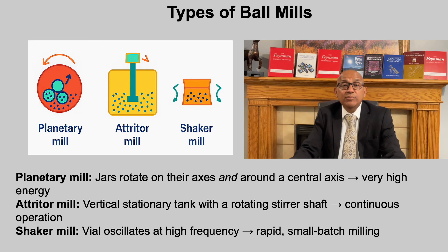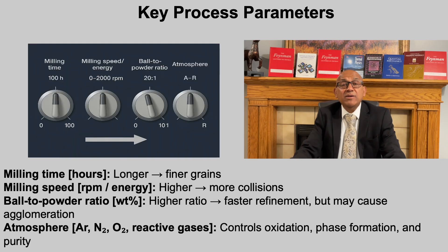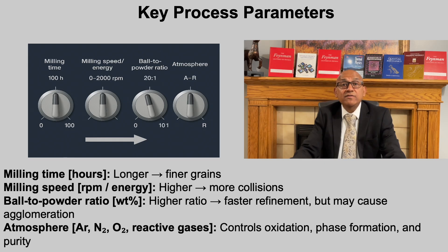Each configuration balances energy input, throughput and scalability depending on the intended application. Several parameters govern the efficiency of ball milling: milling time — longer duration yields finer grains but risks contamination; rotational speed or energy input — higher speeds increase collision frequency and energy transfer; ball to powder ratio — a higher ratio accelerates refinement yet may promote agglomeration; and atmosphere — inert gases such as argon or nitrogen prevent oxidation while reactive gases can initiate compound formation. By tuning these variables, researchers can tailor microstructure, composition and phase evolution to achieve desired properties.